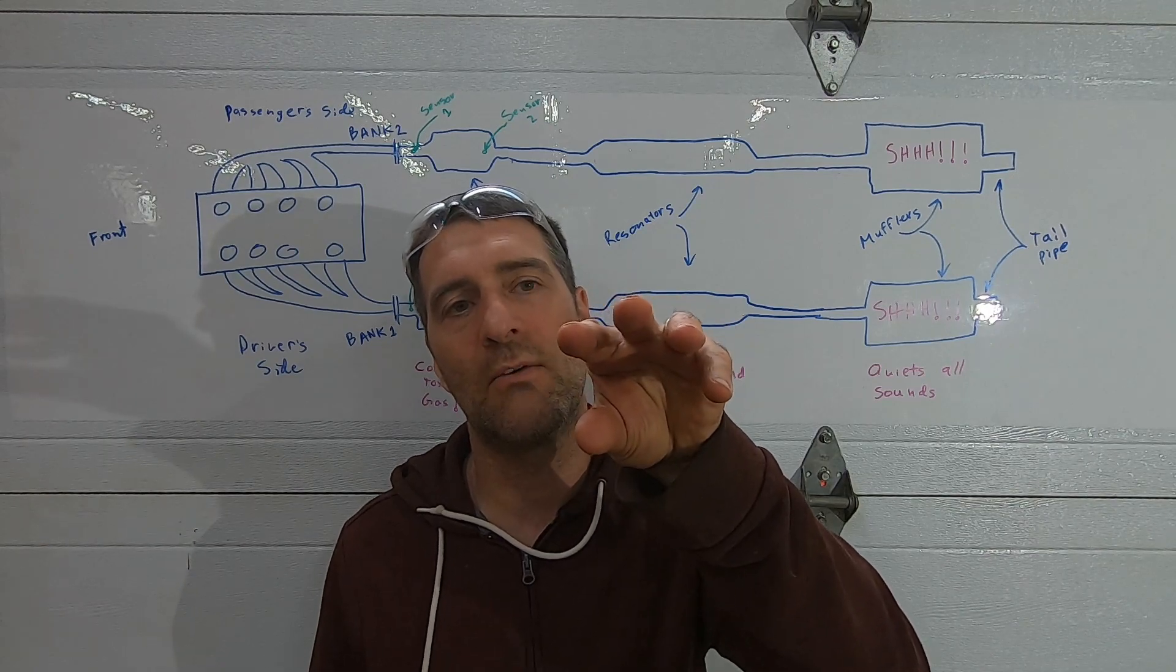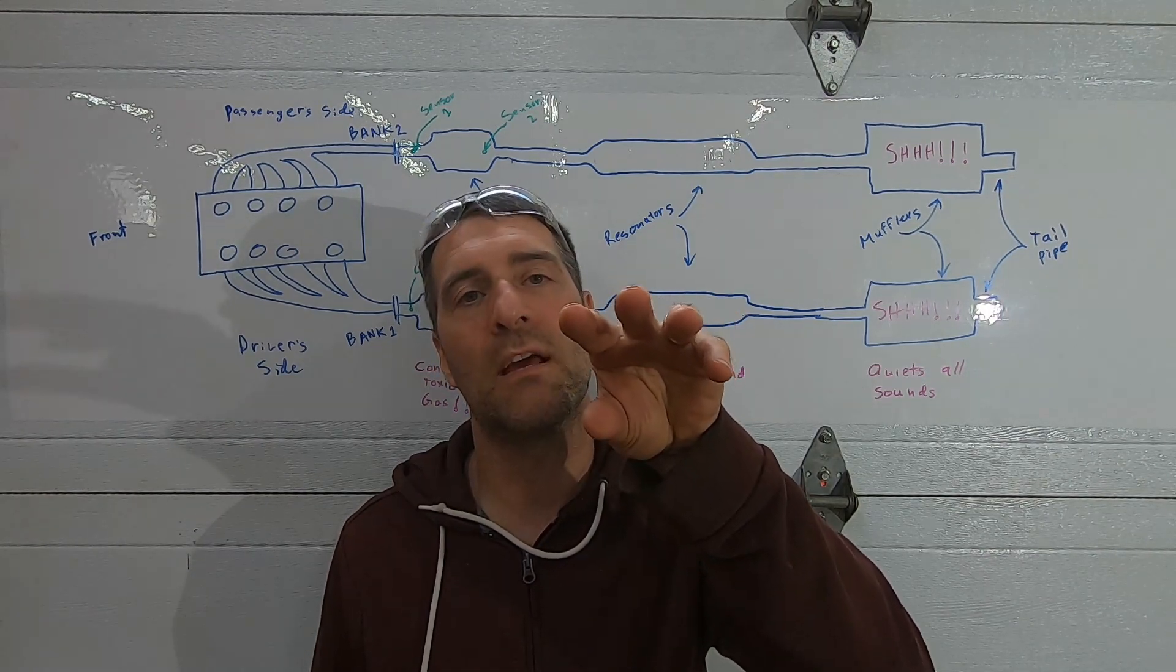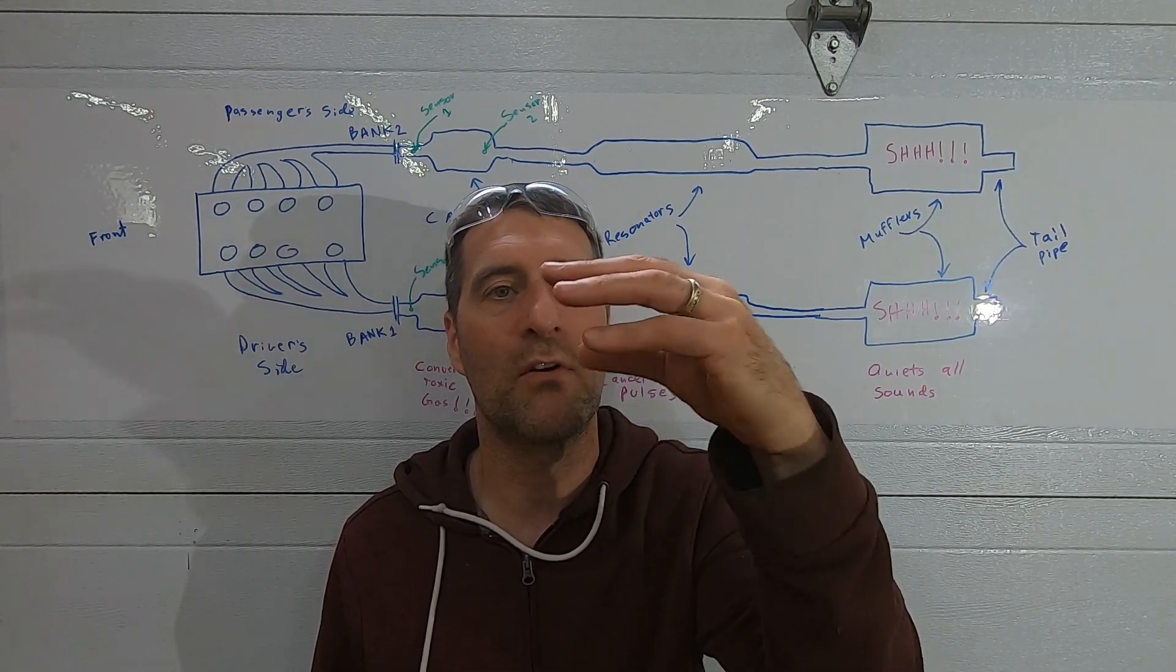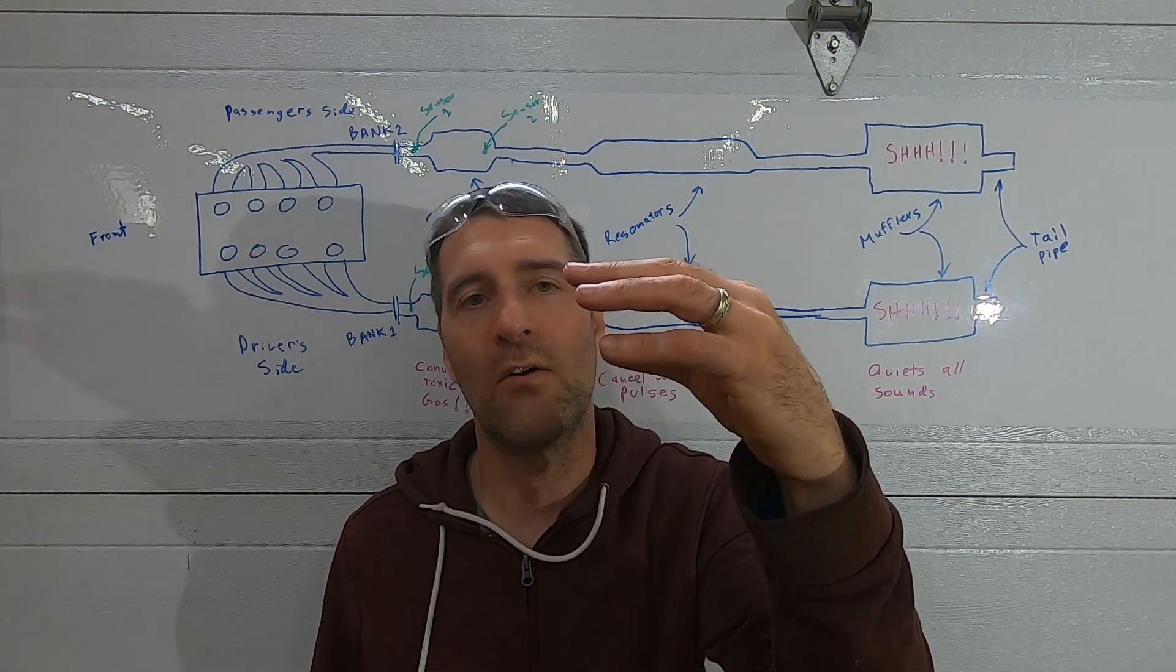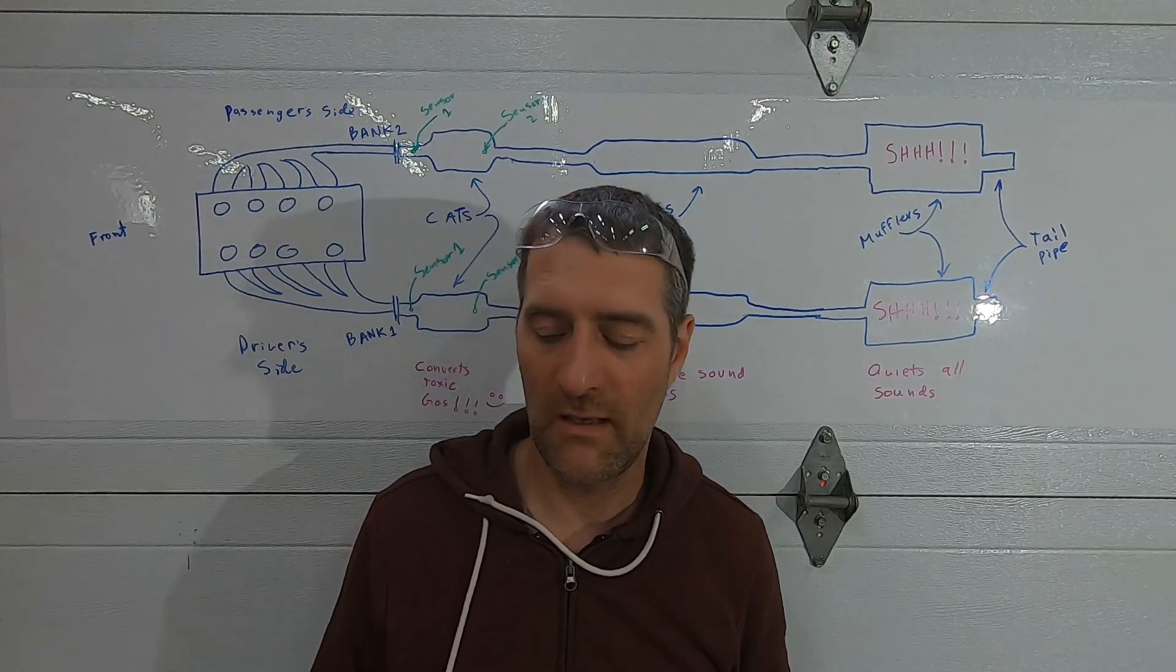Now the honeycomb, the holes are all in one direction allowing the flow to flow through the exhaust gas. But imagine if a piece of that broke and turned 90 degrees - now the flow cannot easily go through those holes. You have a restriction in the catalytic converter.